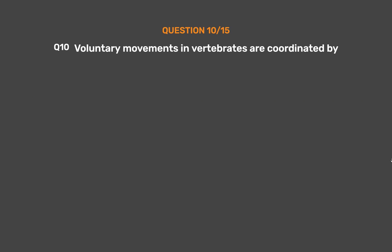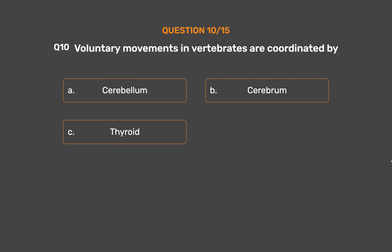Question No. 10. Voluntary movements in vertebrates are coordinated by: Option A - Cerebellum. Option B - Cerebrum. Option C - Thyroid. Option D - Pituitary.